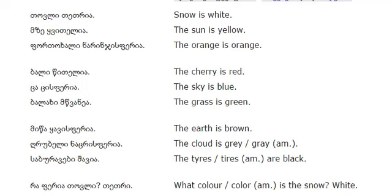Snow is white. The sun is yellow. The orange is orange. The cherry is red. The sky is blue. The grass is green.